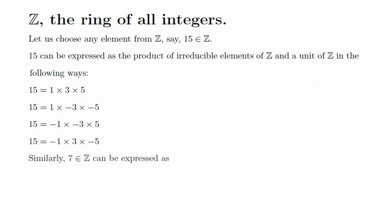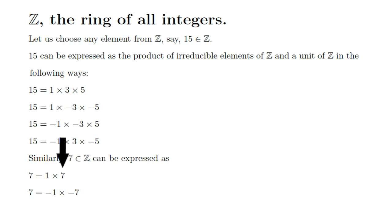Similarly, the integer 7 can be expressed as a product of a unit and irreducible elements in the following ways. The number of elements in both these expressions are the same, and 7 is an associate of negative 7. So both conditions of a unique factorization domain are satisfied, and hence the ring of all integers is a unique factorization domain.